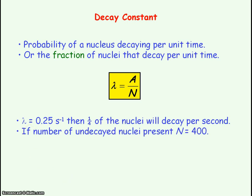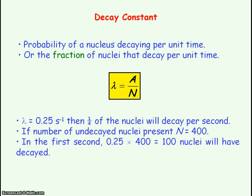So if we had 400 undecayed nuclei present, then in the first second 100 nuclei will decay. And so as we've had 100 nuclei decaying per second, then we can say that the activity is 100 becquerels.